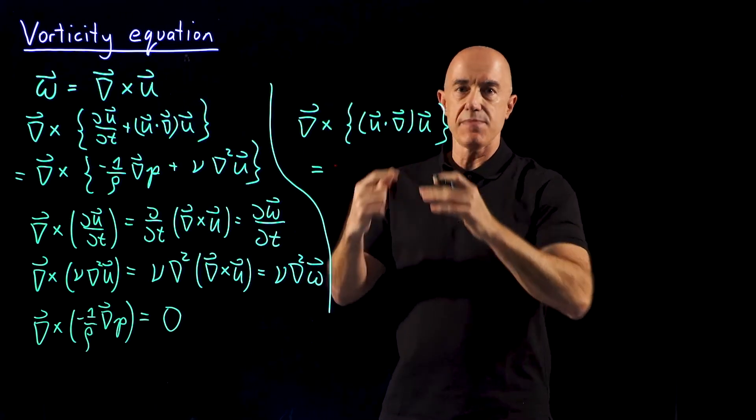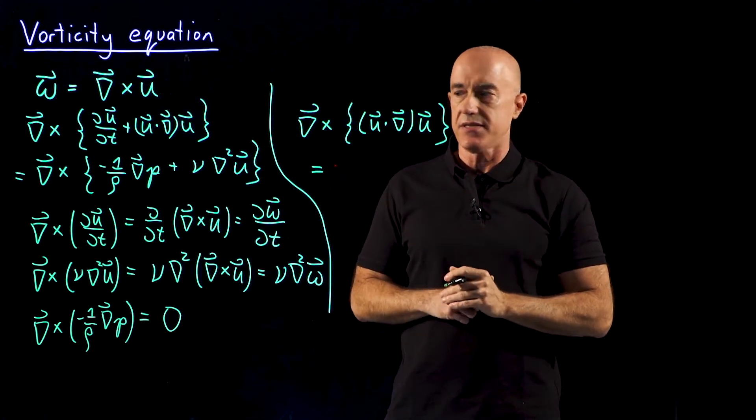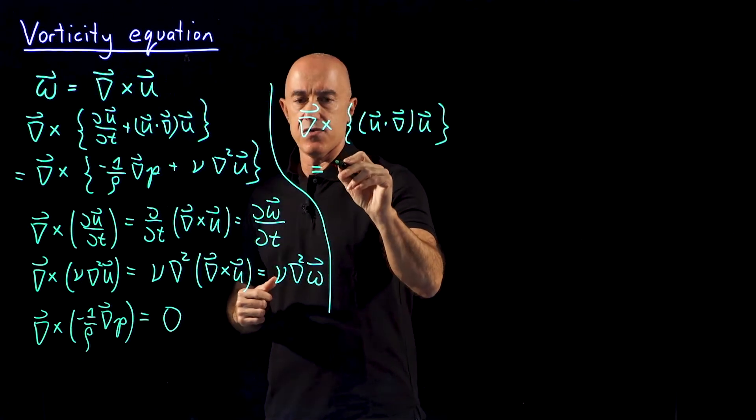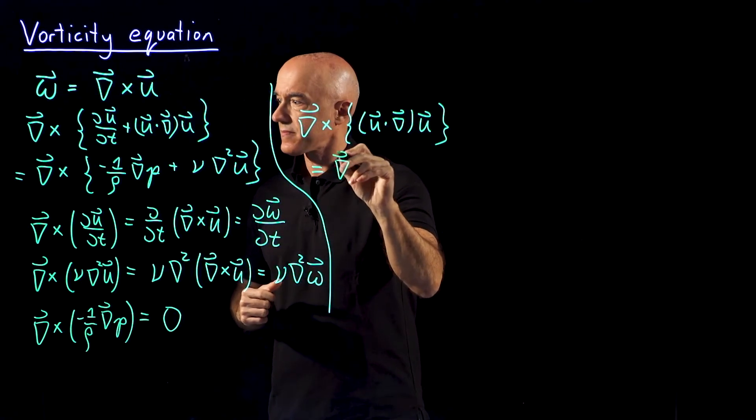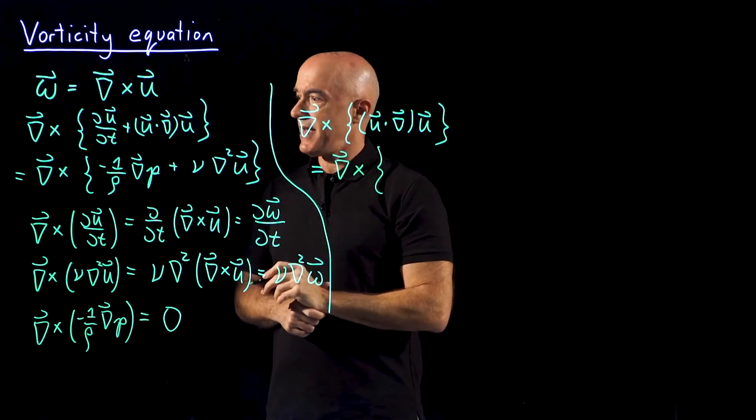You can manipulate this equation using the Levi-Civita symbol. And what you'll find is that this is equal to the curl, manipulating u dot del u.